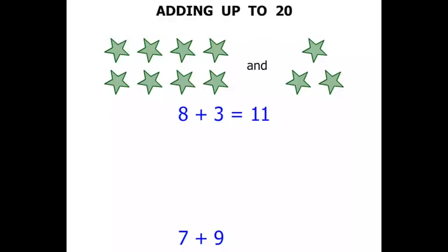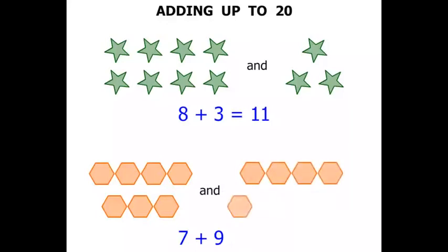we can use some objects to help us out. One, two, three, four, five, six, seven. And one, two, three, four, five, six, seven, eight, nine. So there's our seven and nine.